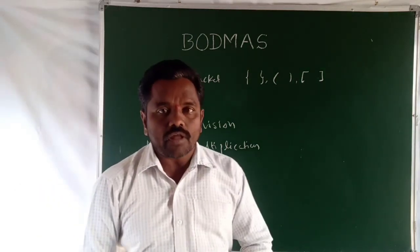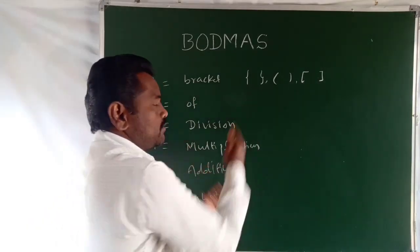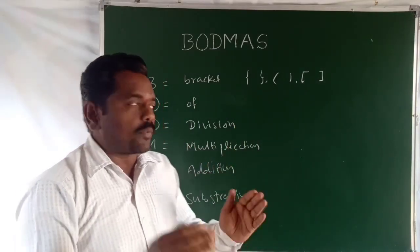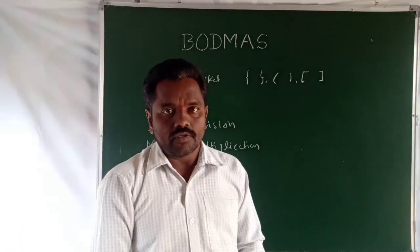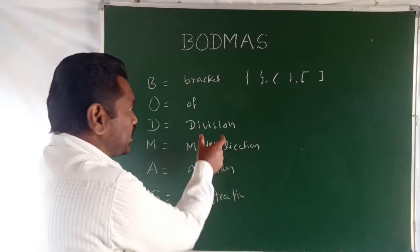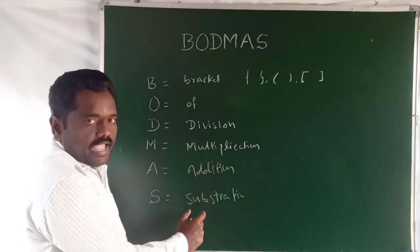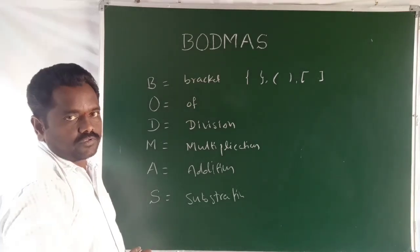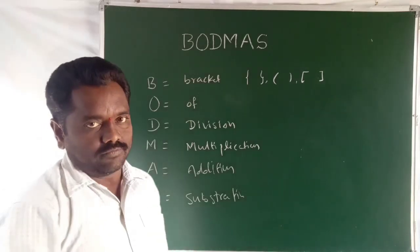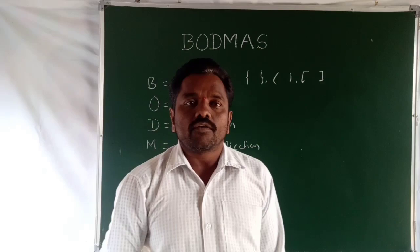So when in simplification, the given problem starts with the bracket. In the bracket, what is that? The simplification order is division, multiplication, addition, and subtraction. How will we solve? Just see the problems.